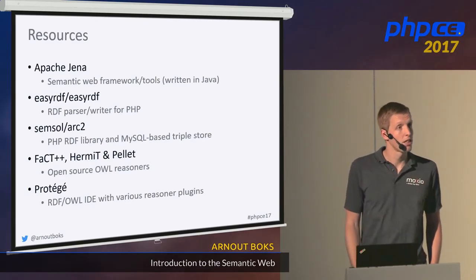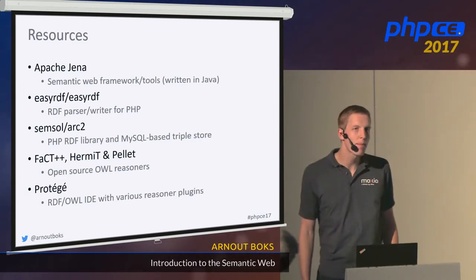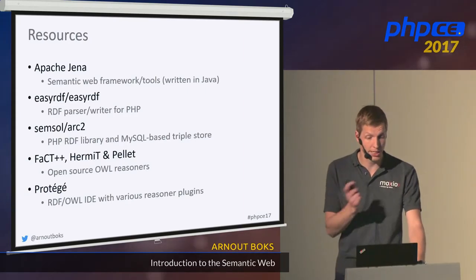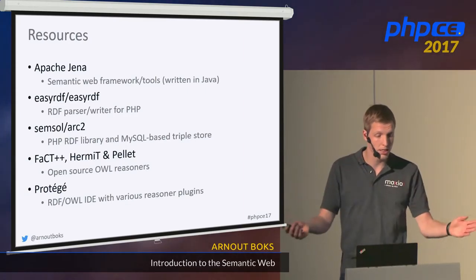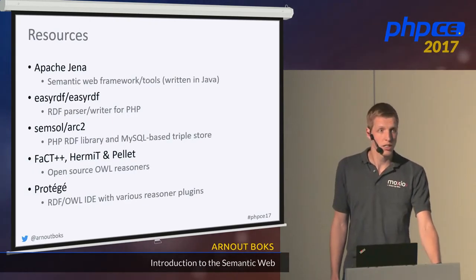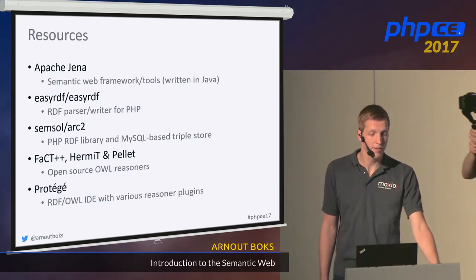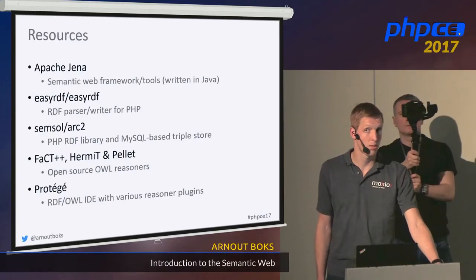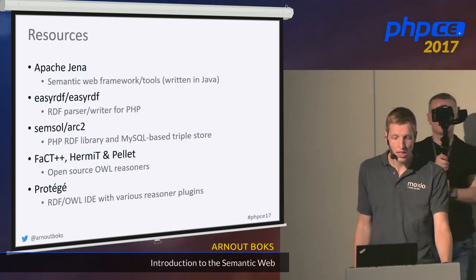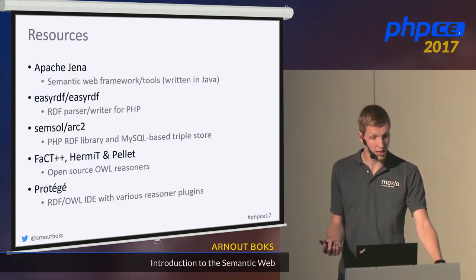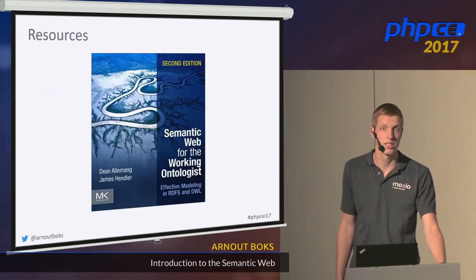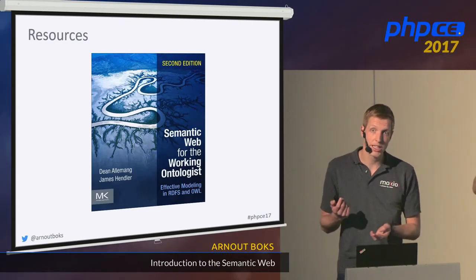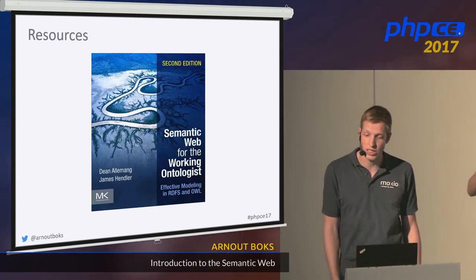There's a lot of software for using and consuming the Semantic Web. The Semantic Web is kind of a Java world — the most popular framework is Apache Jena, a large toolset written in Java. There are also some PHP projects: EasyRDF and Arc2, both can be found on Packagist. There are different open source OWL reasoners: FaCT++, HermiT, and Pellet. And there's Protégé, an RDF/OWL IDE with various reasoner plug-ins — which is also the source of the reasoner screenshot I showed you.